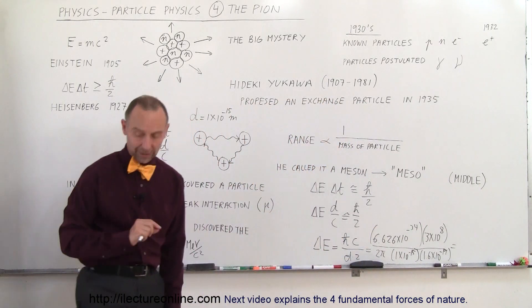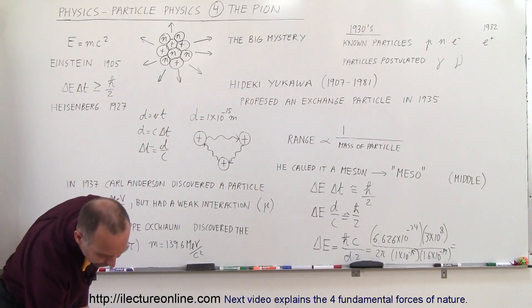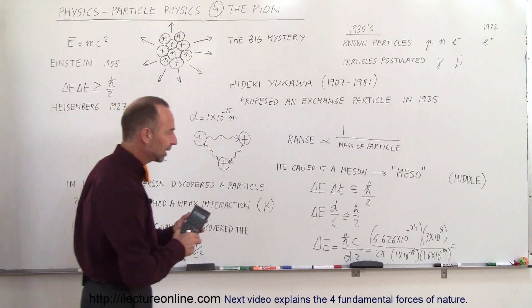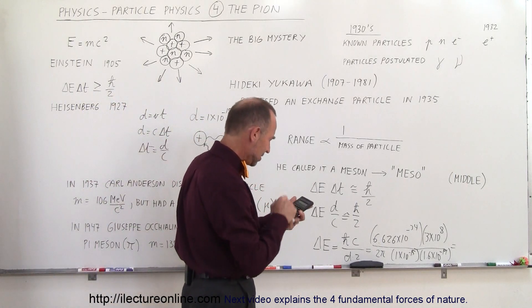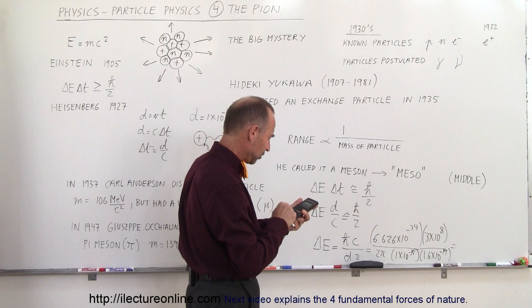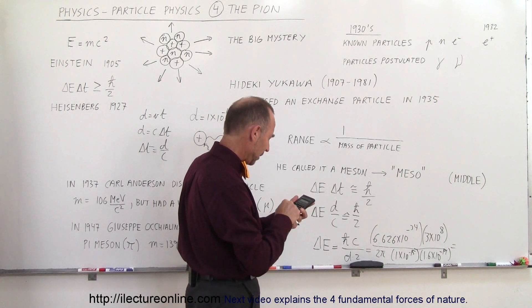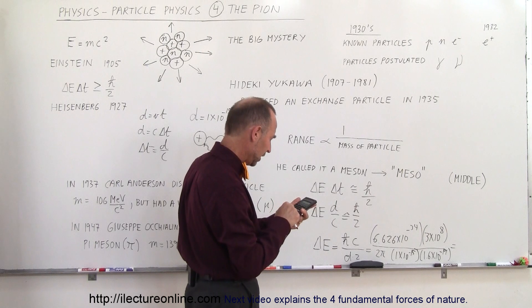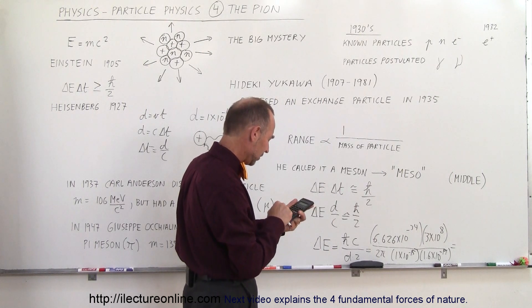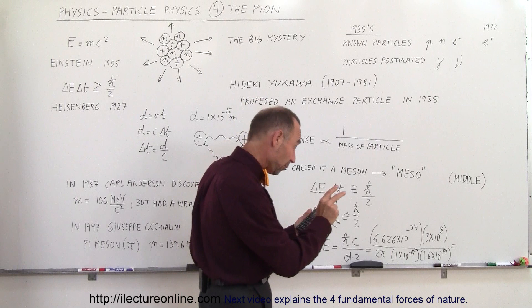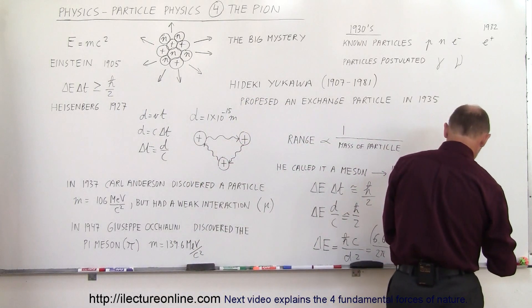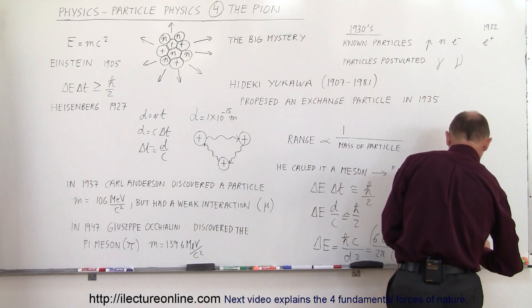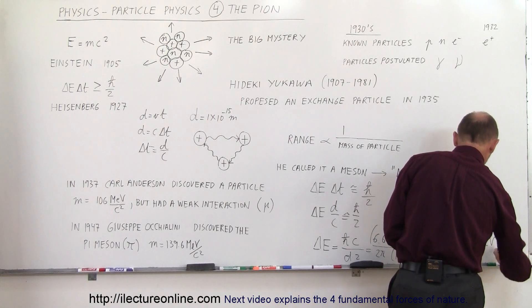So then if we divide that by the relationship, 1.6 times 10 to the minus 19 joules per electron volt, we now have this quantity in terms of electron volts. So with a calculator, of course, Yukawa didn't have a calculator, but he managed, he took that equation and went 6.626e to the 34 minus times the speed of light, divided by 2, divided by pi, and divided by 1e to the 15 minus, and divided by 1.6e to the 19 minus, and he ended up with somewhere in the neighborhood of 98.8, so let's just call it 100 million electron volts.